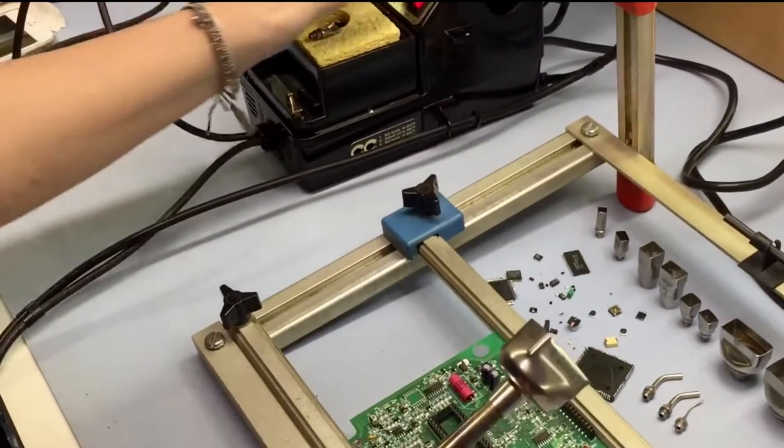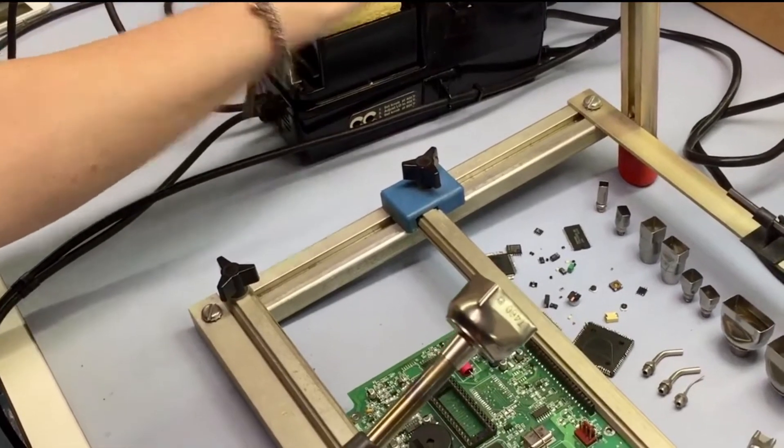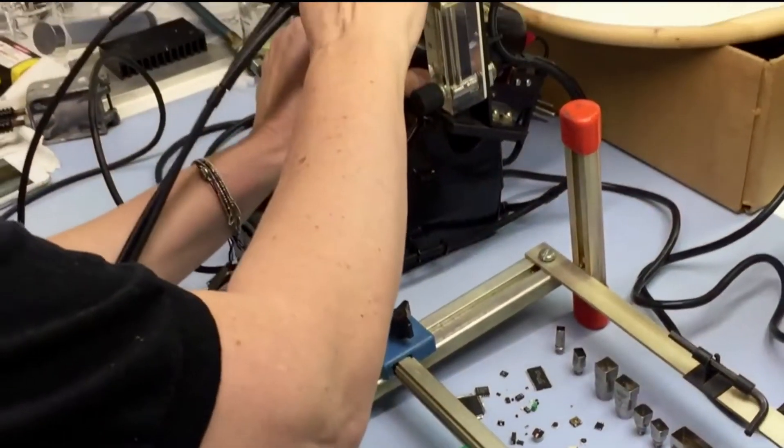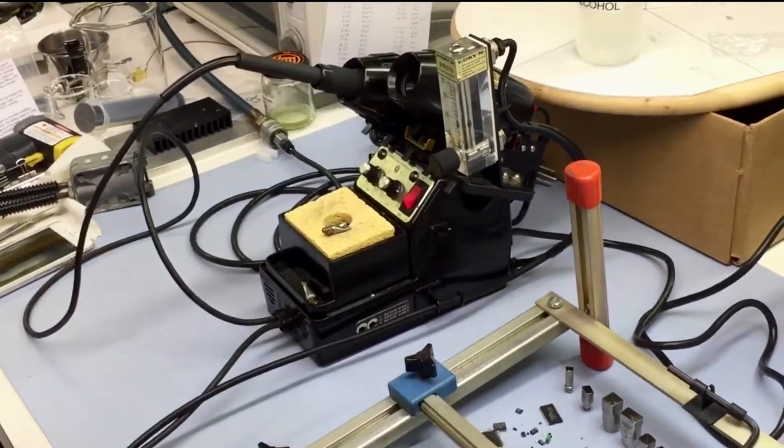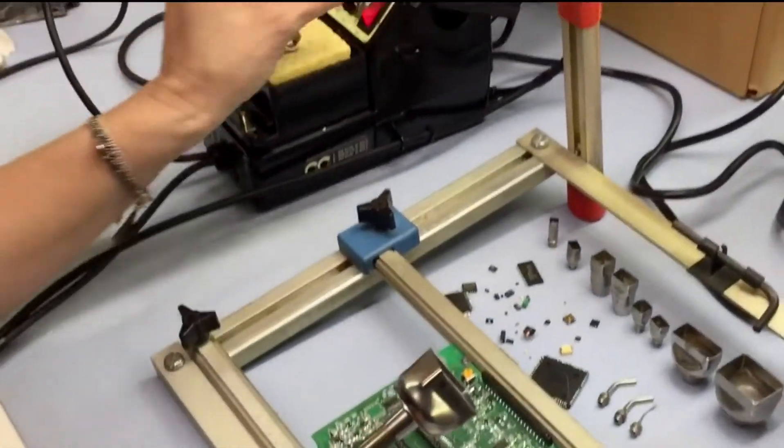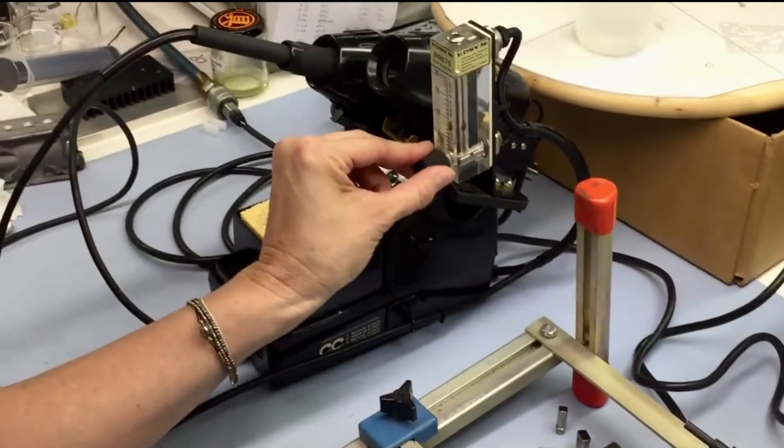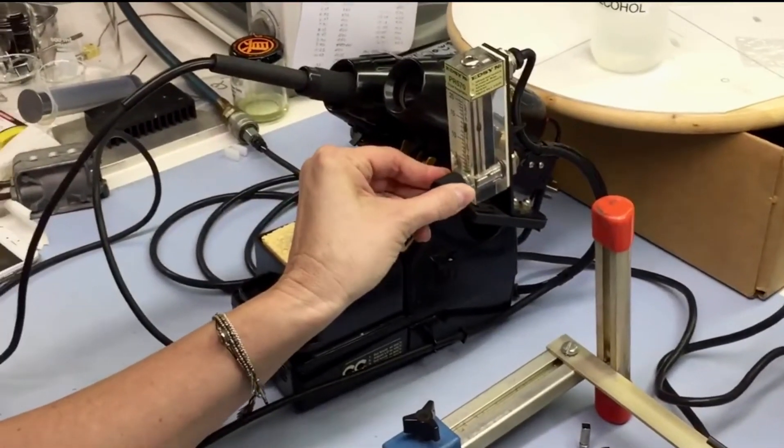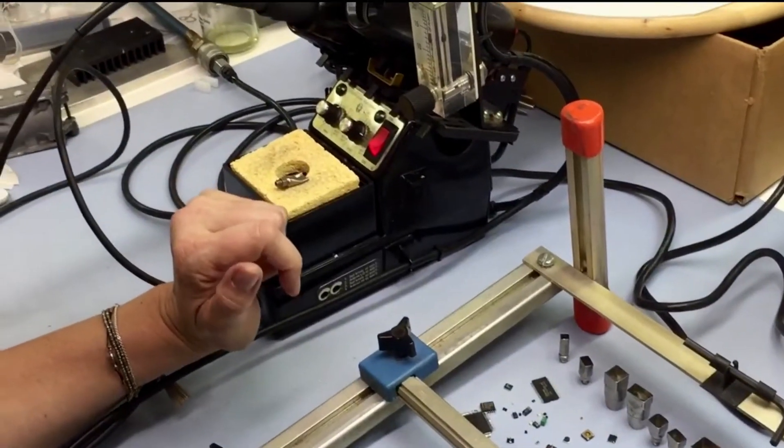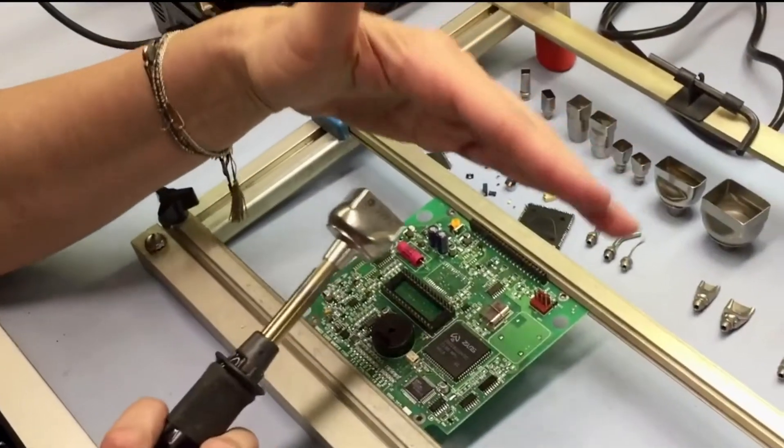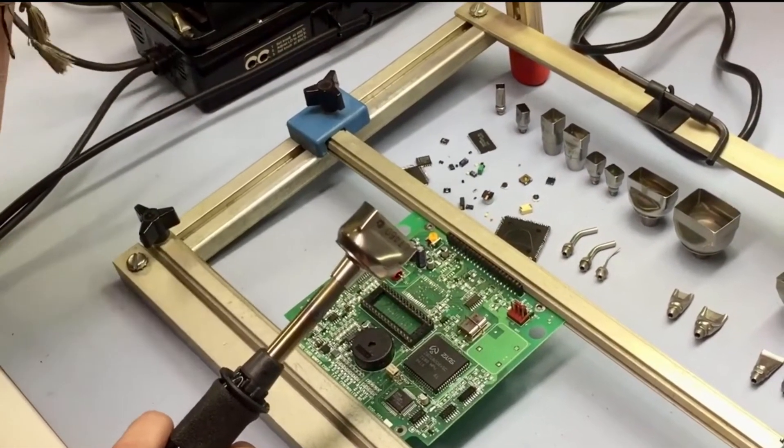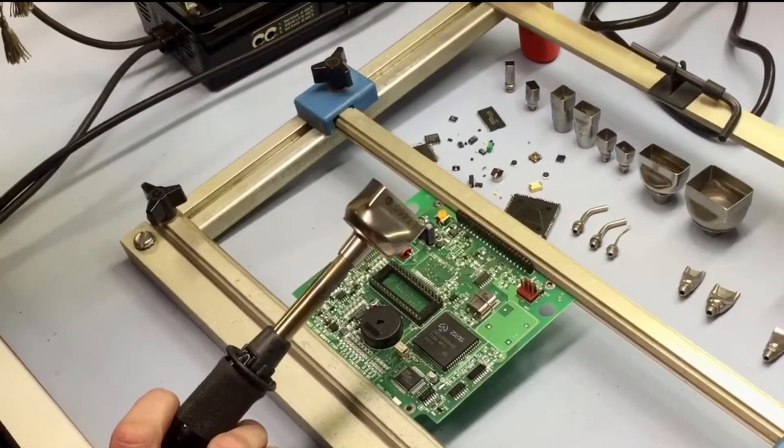We'll turn our air on and once again we're at about 8 psi, but I'm going to turn this up to about 12 psi, maybe 13. The larger the tip, the more air that's coming out, so you want to apply a little more air pressure.